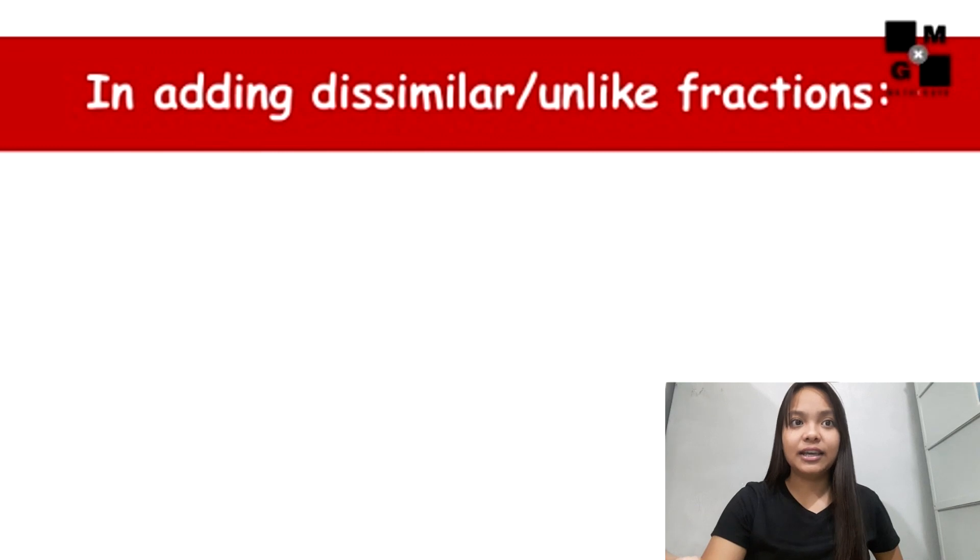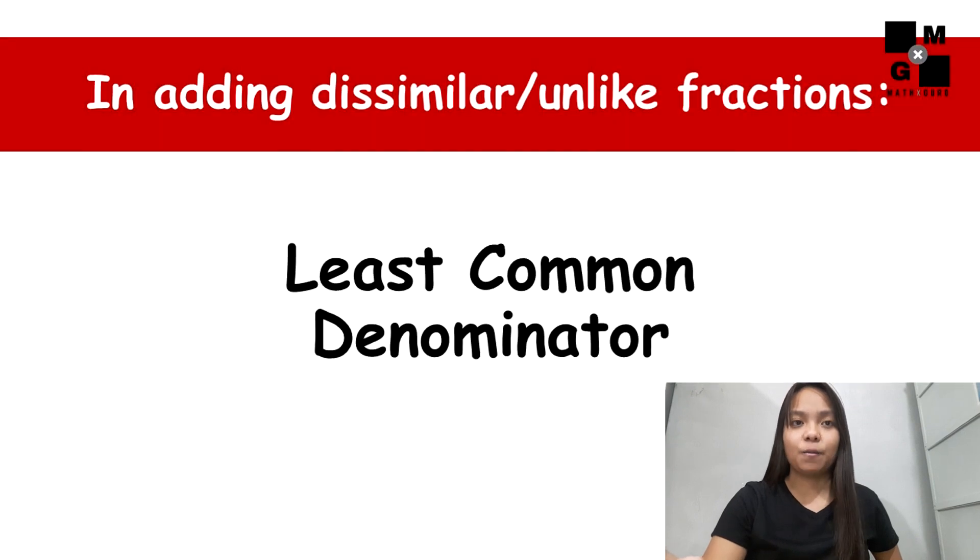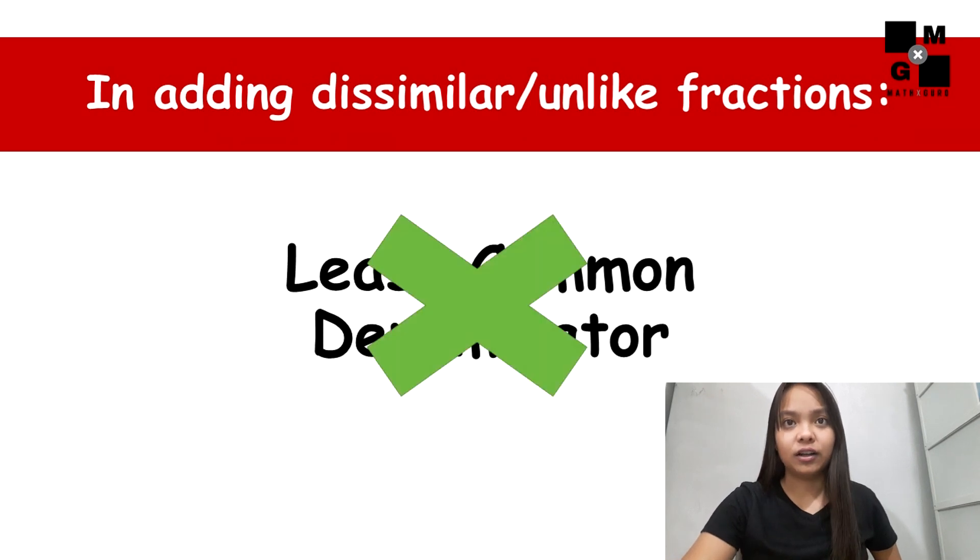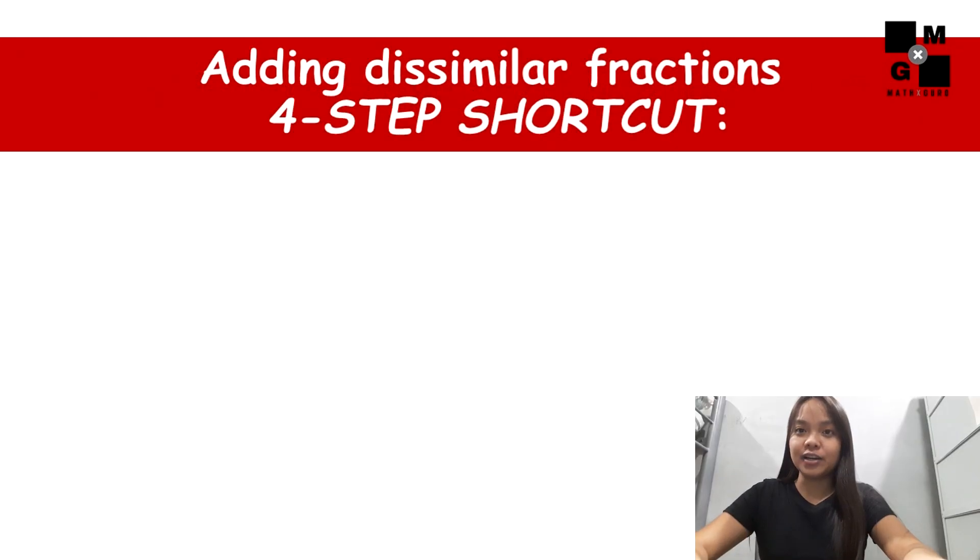Now, let us proceed in adding dissimilar fractions. The usual process that is taught in school involves finding the least common denominator. But sometimes they find it difficult to do that. That is why I'm going to teach you the shortcut in adding dissimilar or unlike fractions. This might help you a lot in solving. In adding dissimilar fractions, you just need to remember four simple steps.